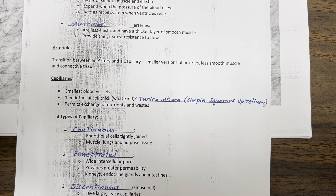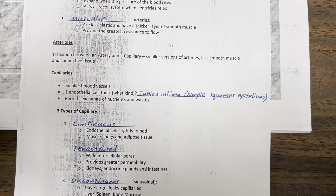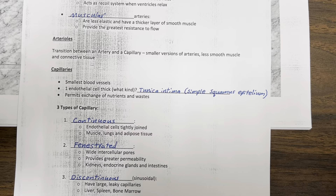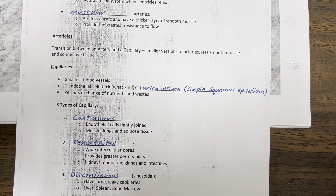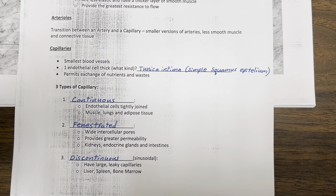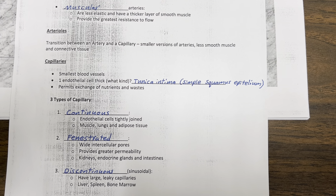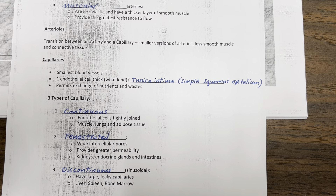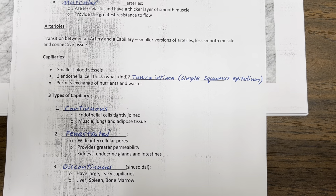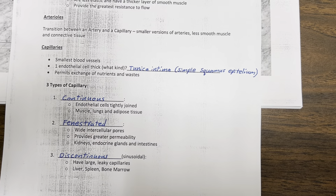Arterioles are smaller versions of arteries. They have less smooth muscle and connective tissue. Arterioles are transitions between an artery and a capillary.